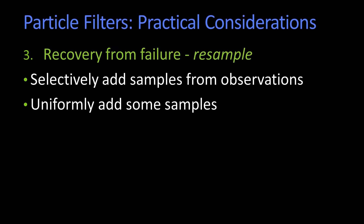Another issue is recovery from failure. Suppose an object really did disappear and reappear — if I have no particles there, I don't have any way of tracking it ever. So a standard thing to do is, each iteration, you randomly put out some particles everywhere, sort of uniformly distributed. Because if my measurements suddenly move over here, there'll be some particles over there, and eventually that will be the distribution that gets tracked.